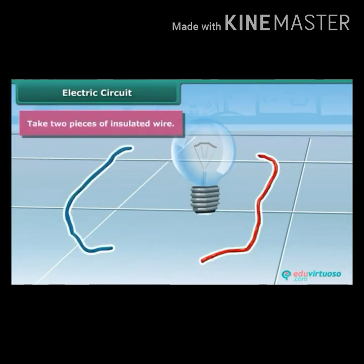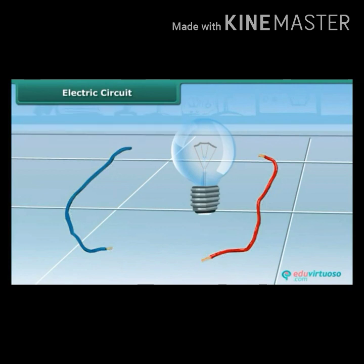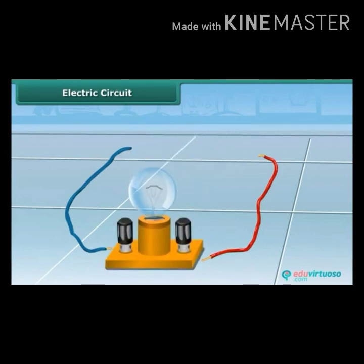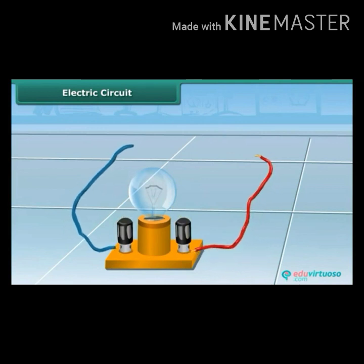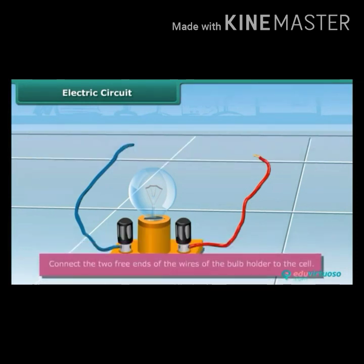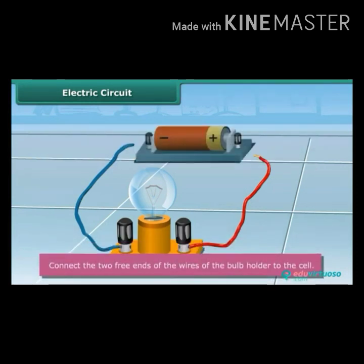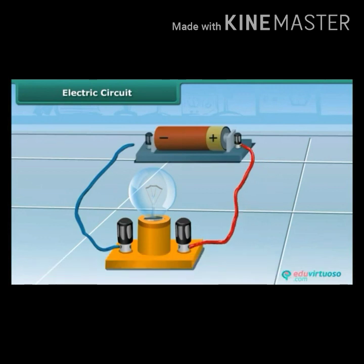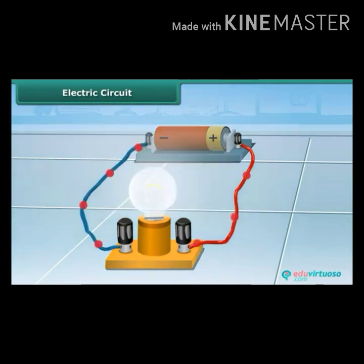Take two pieces of half-meter-long insulated wire and remove the insulation with a knife. Place the bulb in a bulb holder — the two screws act as the two terminals. Connect these wires to the two terminals of the bulb holder, and connect the free ends of the wires to the positive and negative ends of the dry cell.